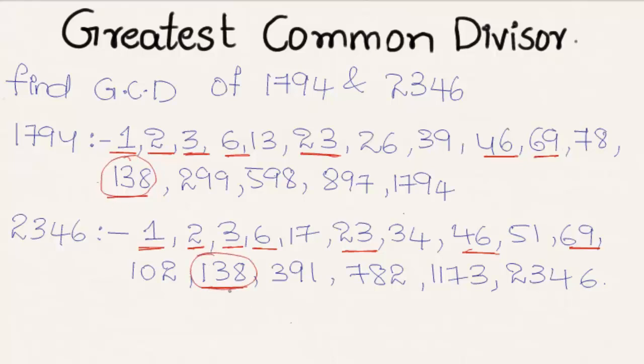The greatest among all these common factors is 138, so we can say that 138 is the Greatest Common Divisor of 1794 and 2346. Hope you understood the concept. Do like and subscribe to vteachacademy.com. Thanks for watching, have a nice day!